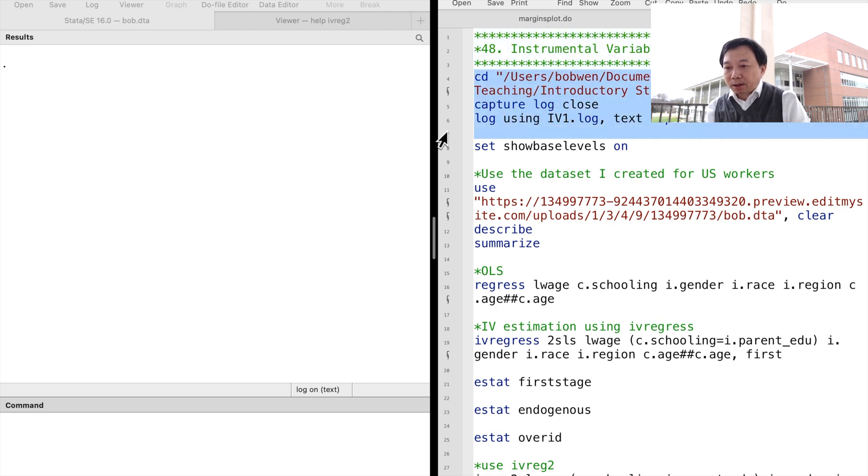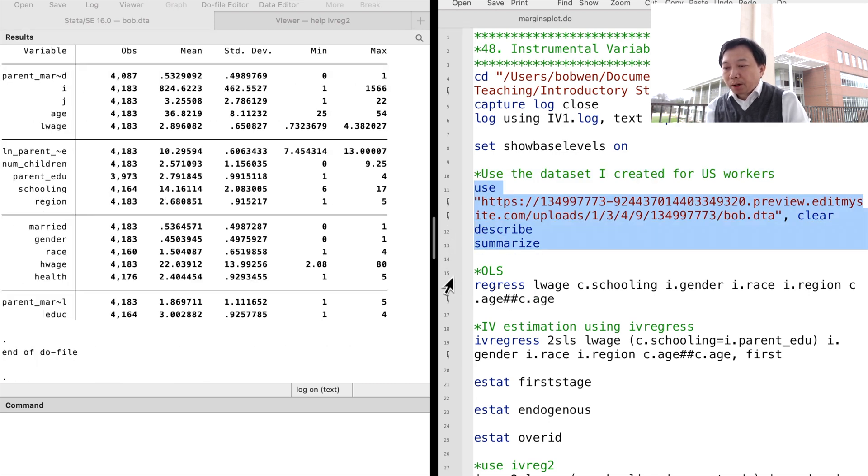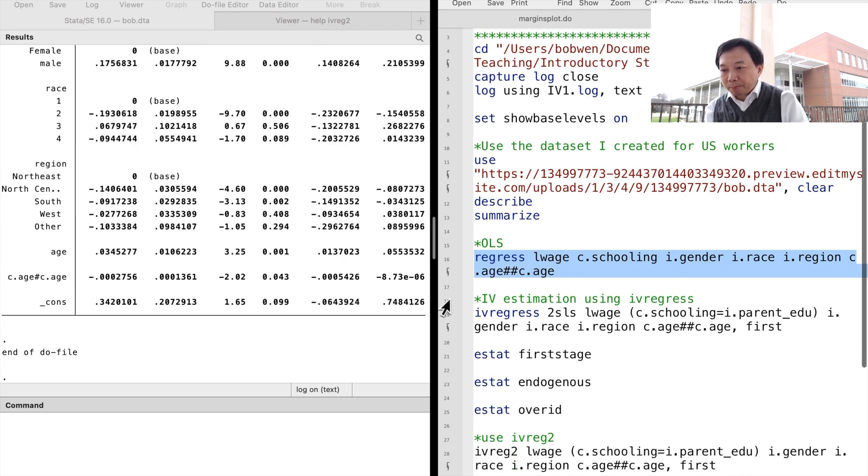Stata provides the instrumental variable method by the commands ivregress, ivregress, and ivreg2. There are three estimation procedures we can choose: the two-stage least squares, the limited information maximum likelihood, and the generalized method of moments.